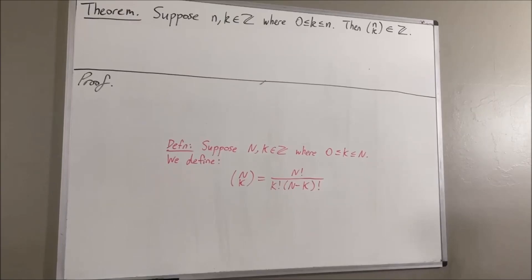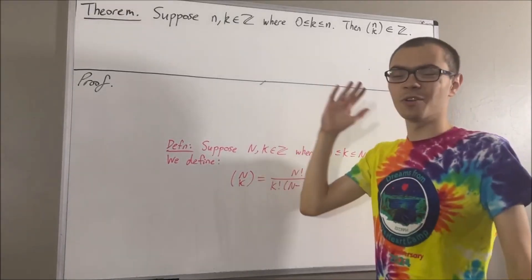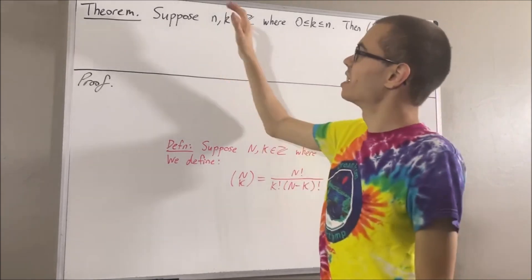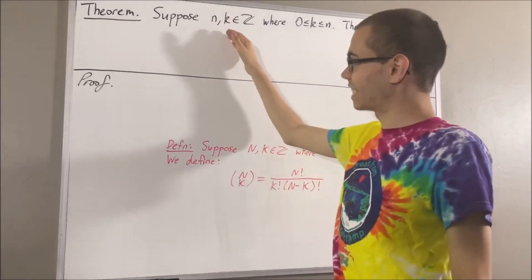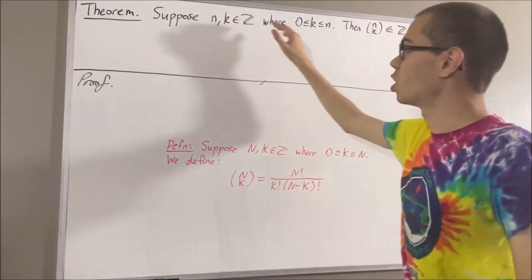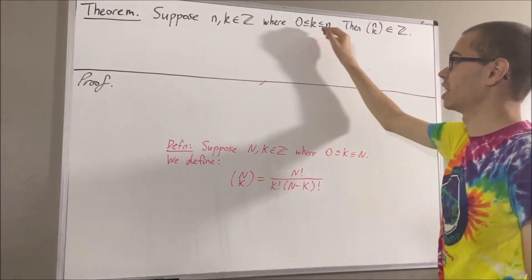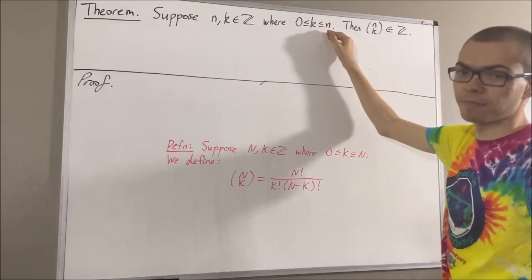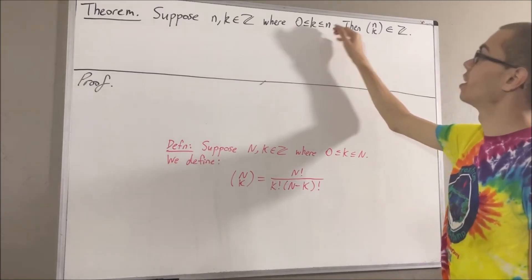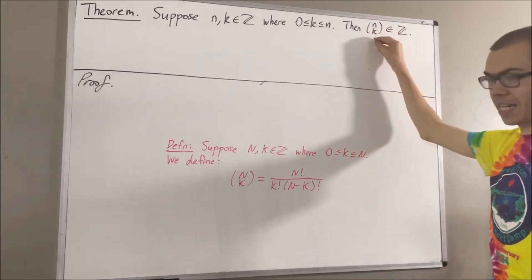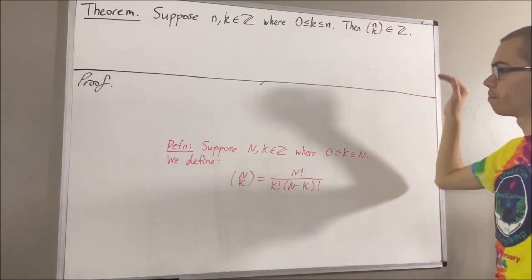Hello! In this video, we are going to prove the following theorem. Suppose n and k are integers where 0 is less than or equal to k is less than or equal to n. Then, n choose k is an integer.